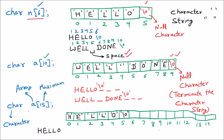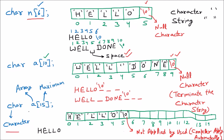An important thing about the null terminator: it is not applied by the user — only the compiler applies it automatically. It is not that users cannot apply it; we can also apply the null terminator while programming. But when taking input from the user — if the user enters a string like 'hello' — it will be stored in array 'a' and '\0' is applied by the compiler automatically. The user has no role there. Those remaining memory locations are simply wasted.